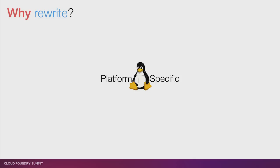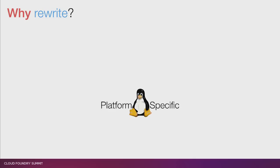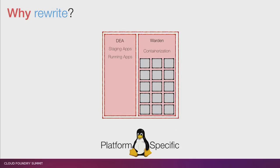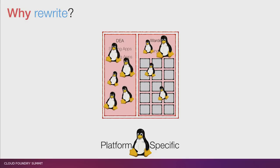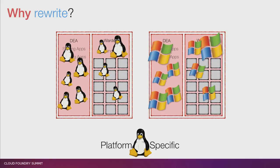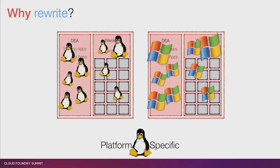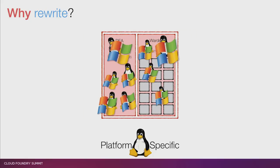A similar thing is that the current system is very platform-specific. The DEA and Warden are running apps in Linux, and there's Linux-specific code riddled throughout both components. That's fine if all you want is Linux, but if you want to support something like Windows as well, you either have to fork and convert all those Linux bits into Windows bits, or put them together with a bunch of if-else statements everywhere — and that's really hard to maintain.